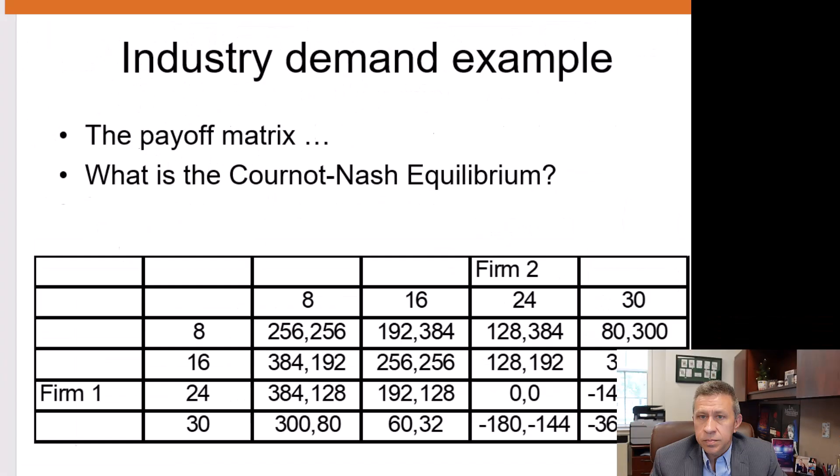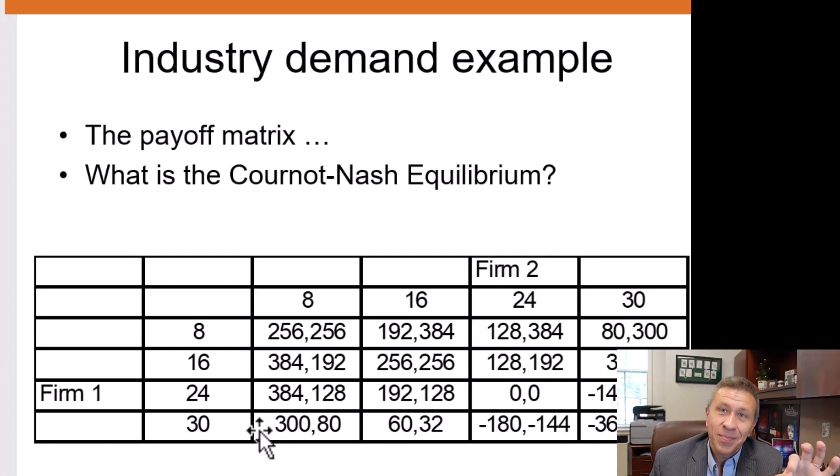Now, in terms of what you fill out, this is what the payoff matrix looks like. Remember, firm one's profit is listed first, firm two's profit is listed second. You can make an argument that these should be zero at these higher numbers, given maybe the firm won't lose the money. But just purely filling out the profit equation, the price goes negative. And it becomes negative. But you could argue that the profits are simply the loss of the per unit cost, not that there's a negative price.